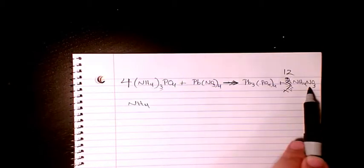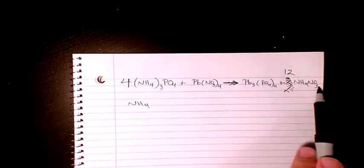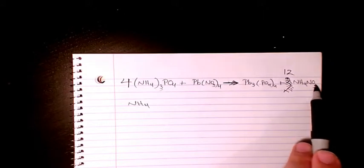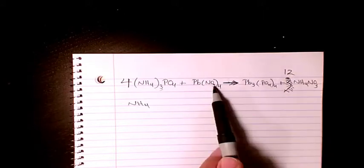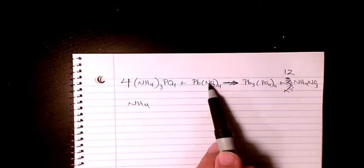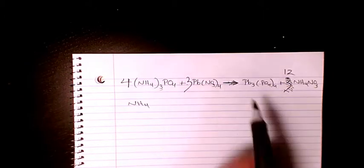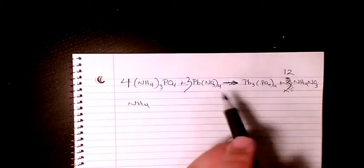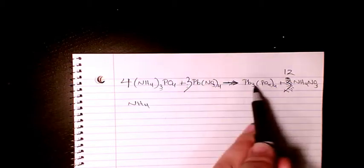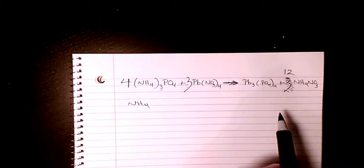What about NO3? NO3 is nitrate ion. We have 12 of them this side. We have four of them, NO3 four, so we have four of them. So we need to put three here. So three times four, now 12 is balanced. PB is balanced, three and three, and that's it.